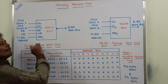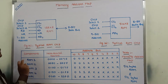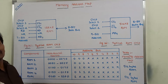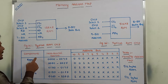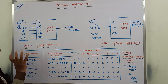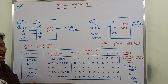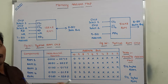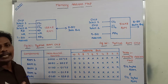In this memory address map table, the first column represents the component column. This column specifies whether a RAM chip or a ROM chip is used. There are two types of chips available in the component column: RAM chip and ROM chip. Whether we are using either a RAM chip or a ROM chip, that can be specified by the component column.